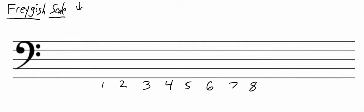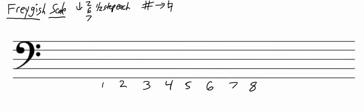If we take our major scale, we write the Fregish scale by lowering the second note, the sixth note, and the seventh note one half step each. In other words, if the second, sixth, or seventh notes of the major scale are sharp, we're going to change it to natural for the Fregish scale.